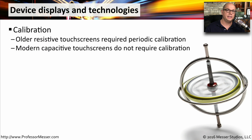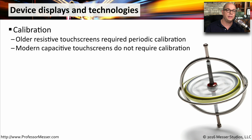On our mobile devices, when we touch the screen, we want to be sure the operating system knows exactly where we're touching. On older devices, we have resistive touch screens that require you to periodically calibrate the screen so that the system knows exactly where you're touching. But the capacitive touch screens that we use in today's devices don't require any type of ongoing calibration.